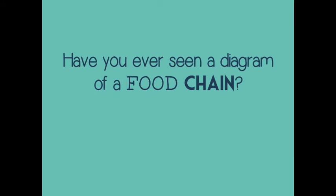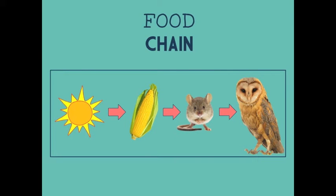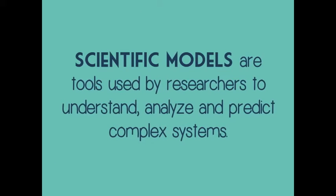Have you ever seen a diagram of a food chain? Food chain diagrams are representations of the feeding relationship between different organisms in a community. In food chain diagrams, the directional flow of food energy is represented by arrows. The arrows point to the organism getting the energy. When we see a diagram of a food chain, we are looking at a graphic representation of a scientific model.